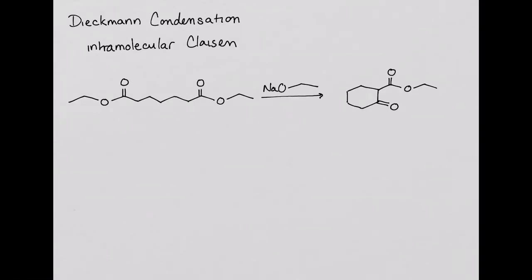Now let's look at the mechanism. First, I'm going to redraw the diester in a way that makes it easier to see where the ring is forming. Next, let's number the carbons so that we can keep track of them throughout the mechanism.